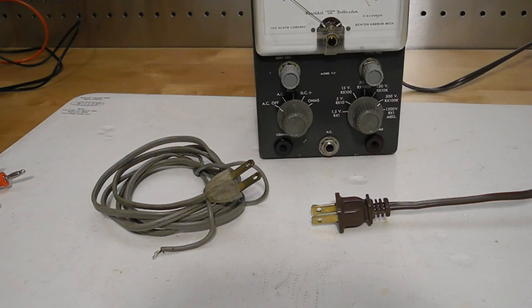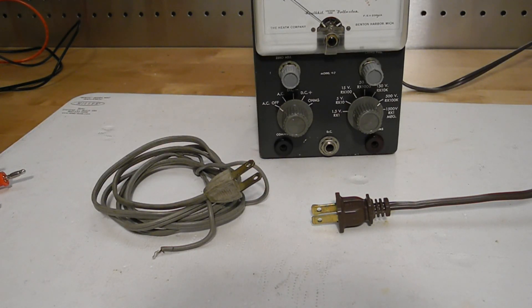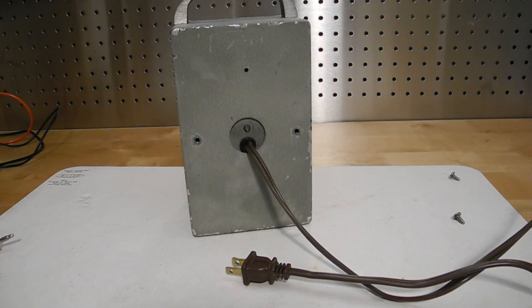The line cord was in bad shape and intermittent. I replaced it with a new cord made from a brown two-conductor extension cord. I also replaced the grommet that the cord passes through.